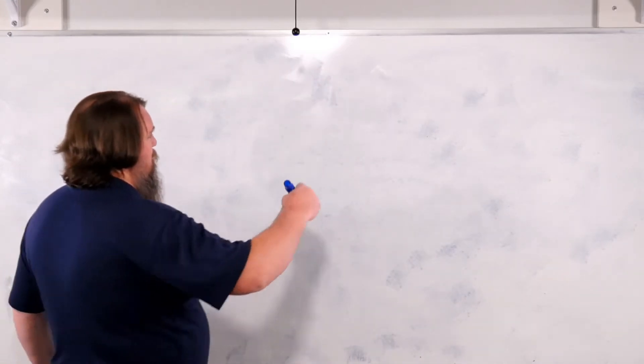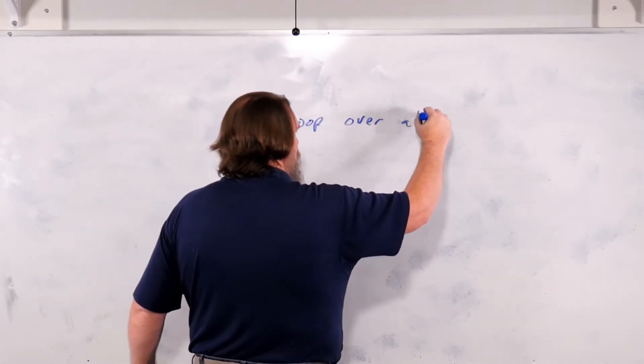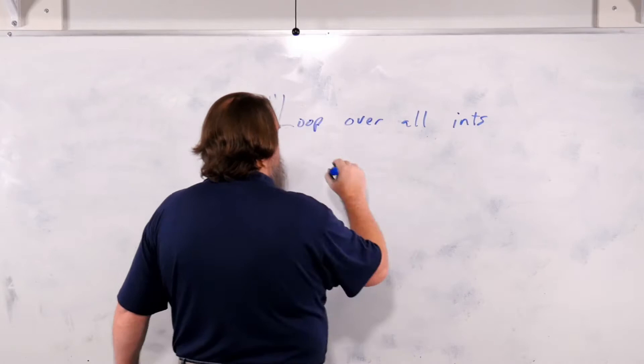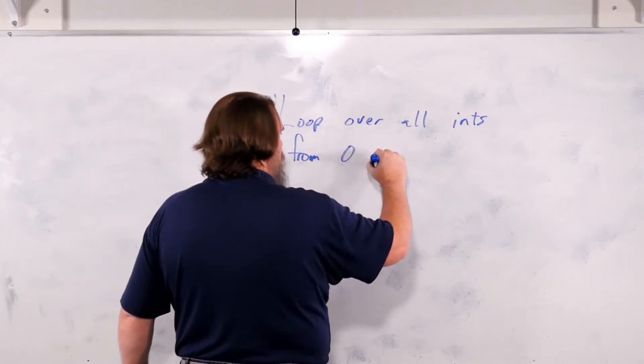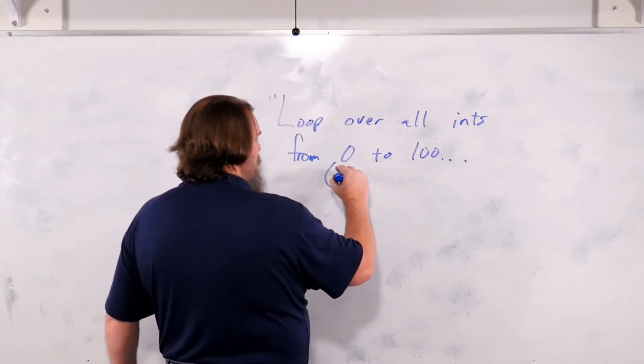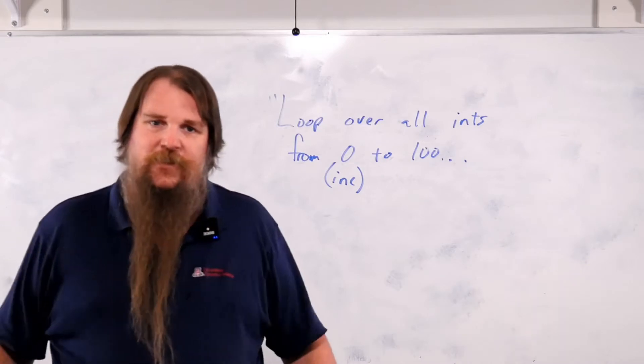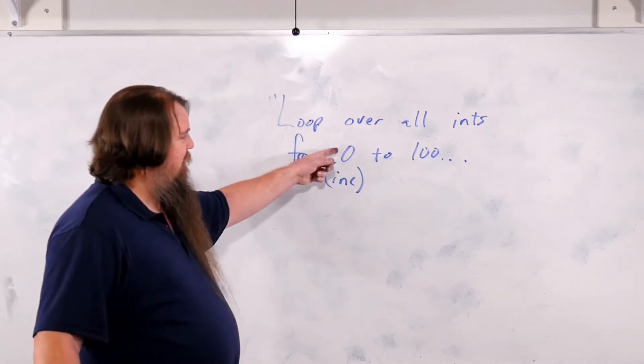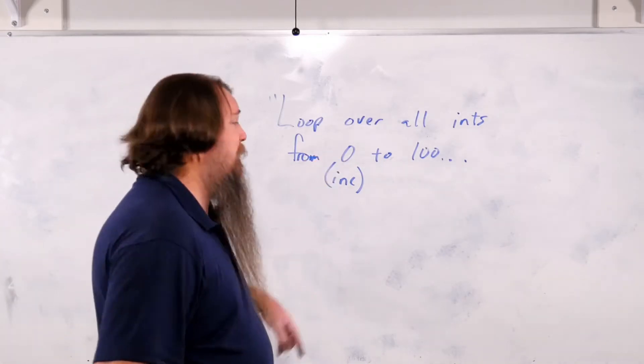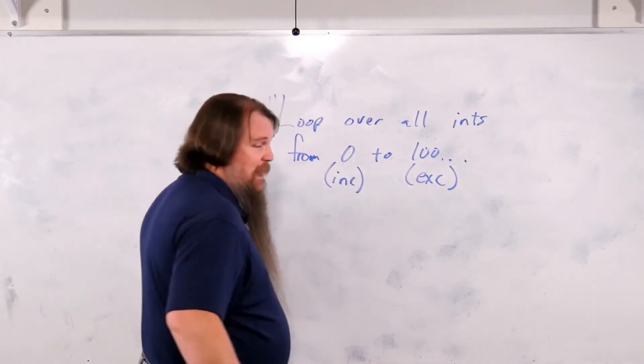So let's say that we want to loop over all ints from 0 to 100, but we want this to be an inclusive bound. Remember, when we talked about slicing, inclusive bound means this number will be part of the range, and this is going to be an exclusive bound.